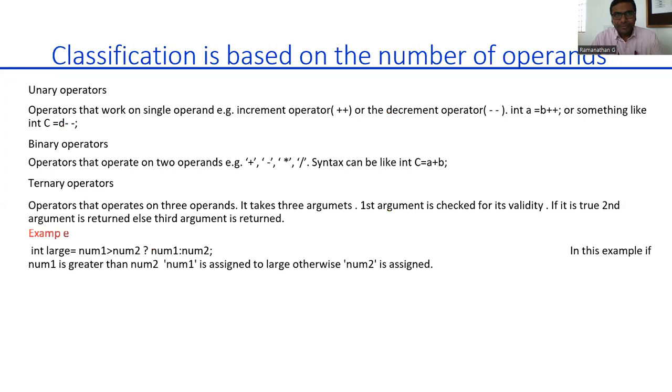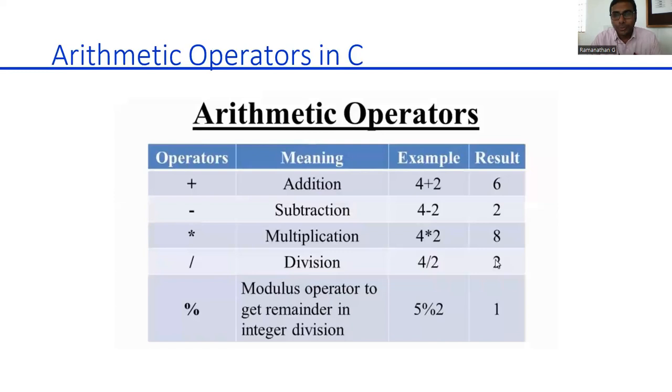Based on the number of operands, we have seen different types: unary operators, binary, and ternary. Unary operators work on a single operand. Binary operators work on two operands. Ternary operators work on three operands. These are the basic things you need to know before going to the programming concepts. This will give a very clear idea about how to use the syntax and semantics provided in the programming language.